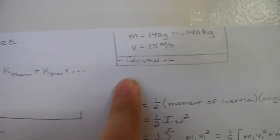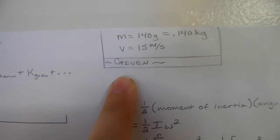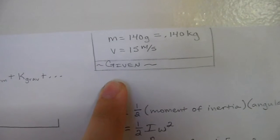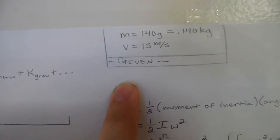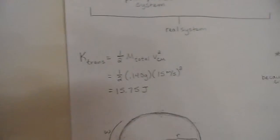Alright, now for this frisbee, it's a circle, so we're given that its mass is 140 grams or .14 kilograms and also its translational velocity is 15 meters per second. We're given nothing else about it.